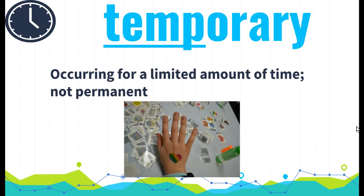Temporary means occurring for a limited amount of time, not permanent. The picture here is a temporary tattoo. Your parents have probably allowed you to have a temporary tattoo, which means it's not permanent. So you are stuck with temporary tattoos — they are not permanent, they are only there for a limited amount of time.